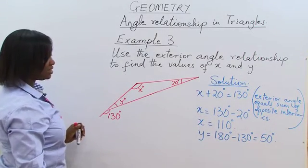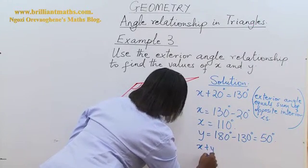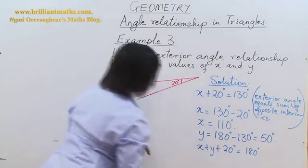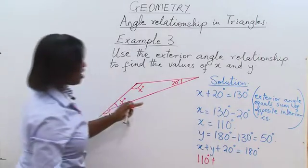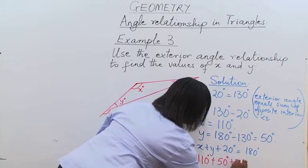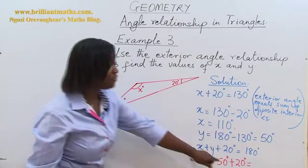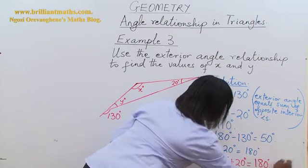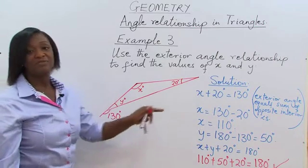Let's check to see if our answer is correct using the sum of the angles of the triangle. That means X plus Y plus 20 degrees should give us 180 degrees. Our X is equal to 110, our Y is equal to 50 degrees, and 20 degrees is the third angle. 110 plus 50 is 160; 160 plus 20 degrees is equal to 180 degrees. So our answer is correct. The value of X is 110 degrees and the value of Y is 50 degrees.